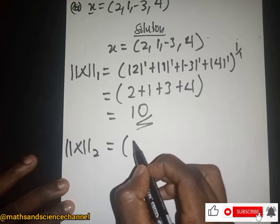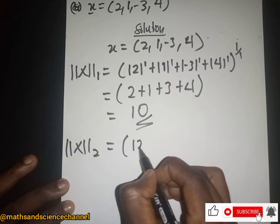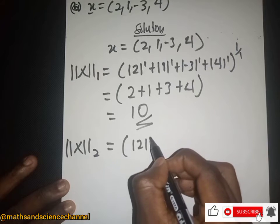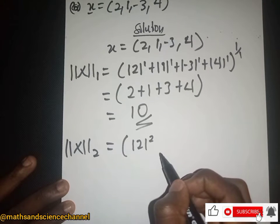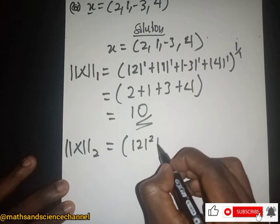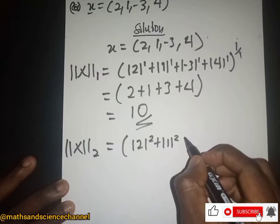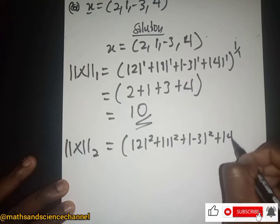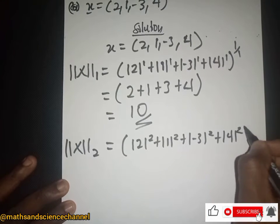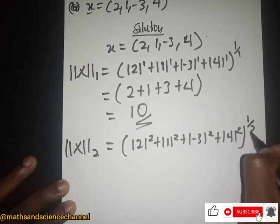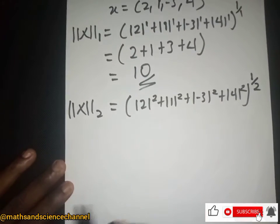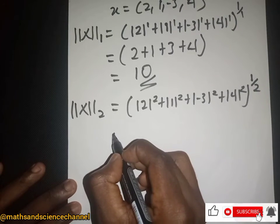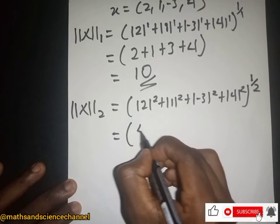For the vector norm 2, it's the same idea but this time each element is raised to the power 2 — so 2 squared, 1 squared, (-3) squared, and 4 squared — and then everything is raised to the power 1 over 2.